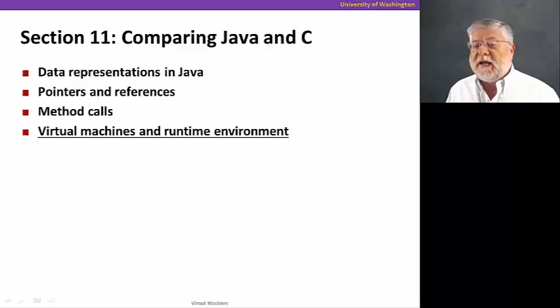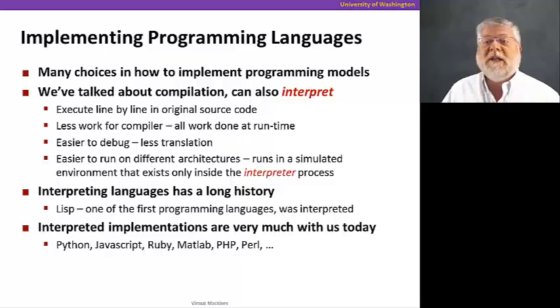So first, let's talk about implementing programming languages. There's actually many choices to how to implement programming models. For the most part in this course, we've talked about compilation, taking a C program, compiling it into assembly language instructions, which in turn are further compiled into the actual machine code that runs on our CPU.